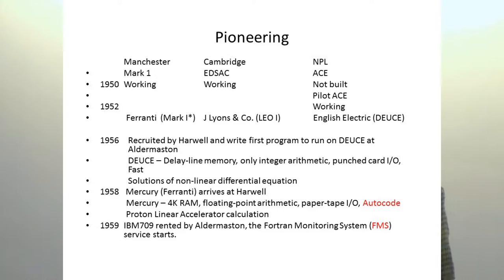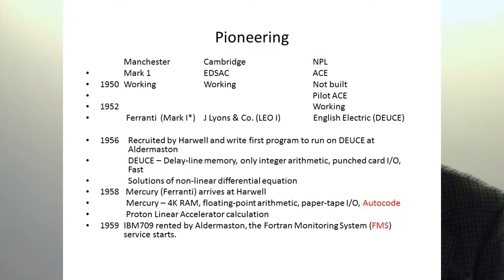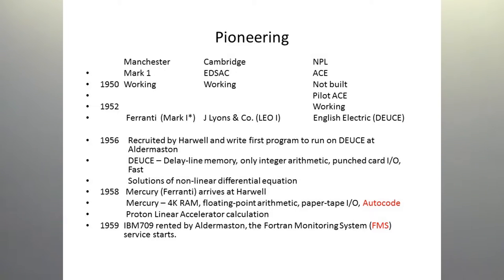Good evening, everyone. I'm going to start right at the beginning. After the Second World War, in the second half of the 1940s, there were three efforts in the UK to design and build a digital computer. These three were at Manchester University, Cambridge University, and the National Physical Laboratory, on the west of London. The machines they designed were called the Mark I of Manchester, the EDSAC at Cambridge, and at NPL, a machine called the ACE - the Automatic Computing Engine.